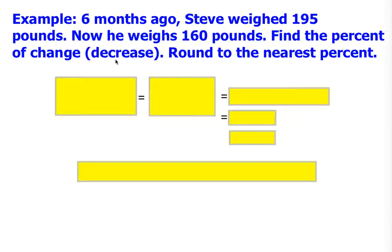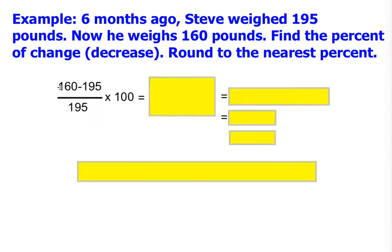Round to the nearest percent. The setup would be the new amount of 160 pounds minus the original amount of 195 pounds, divided by 195 pounds — the old amount — multiplied by 100.